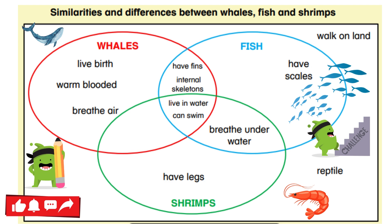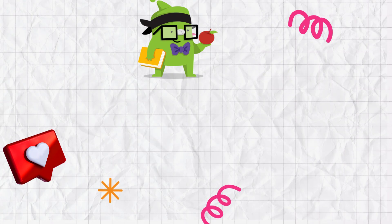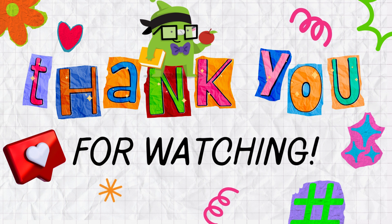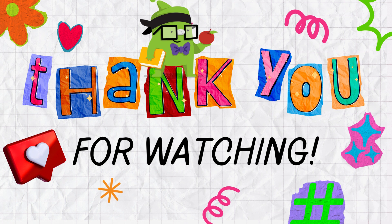We can use Venn diagrams with characteristics like animal traits and food, but also with numerical data like days or results of a taste test. So I challenge you to create some Venn diagrams and talk about them in class. I can't wait to see what kind of Venn diagrams you come up with. If you have any questions, let me know in the comments!